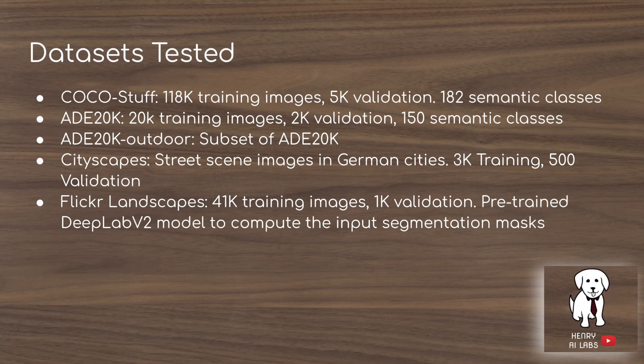Here is a list of some of the datasets used to construct the GAU-GAN model. Probably most interesting is the Flickr landscapes dataset — not because it's the biggest (that's the COCO-Stuff dataset) — but because they use the DeepLab V2 segmentation model to label it automatically, avoiding any hand labeling of the segmentation masks.